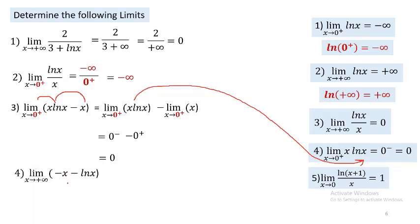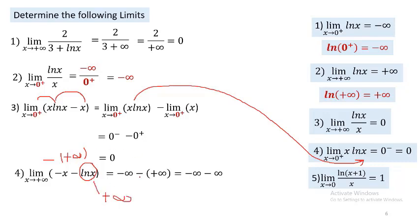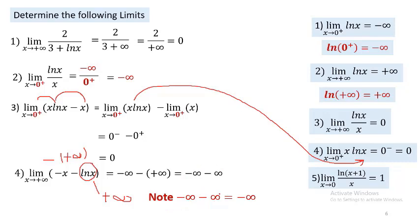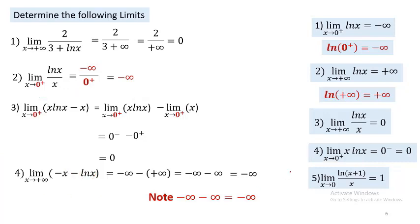Application 4: find the limit of −ln x − x as x approaches +∞. Substituting +∞: −ln(+∞) = −∞, and −x gives −∞. So we have −∞ − ∞ = −∞. The value of this limit equals −∞.